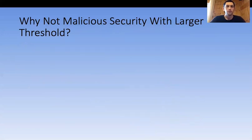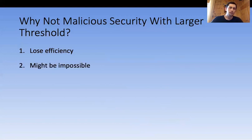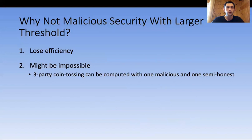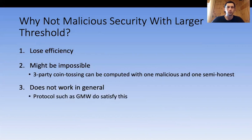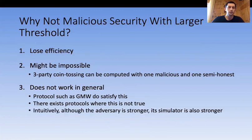The most naive approach would be to take a protocol that can handle more malicious parties than required. But this won't work for several reasons. First, we lose efficiency. Second, if we want guarantees like guaranteed output delivery, this might be impossible. Third, it doesn't work in general — even though standard protocols like GMW satisfy some properties, increasing the malicious security threshold doesn't always help, because the simulator is also stronger, which is problematic in the reduction.